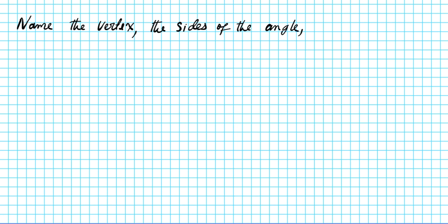Let's take a look at question number one. The instructions are for us to name the vertex, the sides of the angle, and we're to name the angle itself in four different ways.